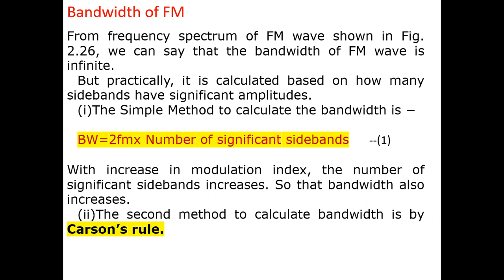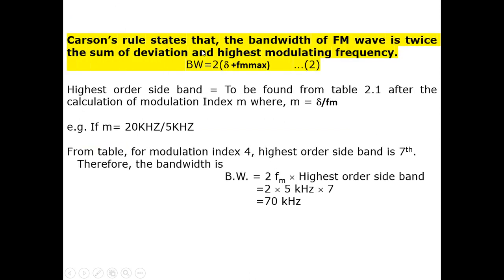For the bandwidth of FM, a commonly used method is Carson's rule. Carson's rule states that the bandwidth of an FM wave is twice the sum of the deviation and the highest modulating frequency: BW = 2·(Δ + FM_max). For example, if Δ = 20 kHz and FM = 5 kHz, the modulation index m = Δ/FM = 20/5 = 4.